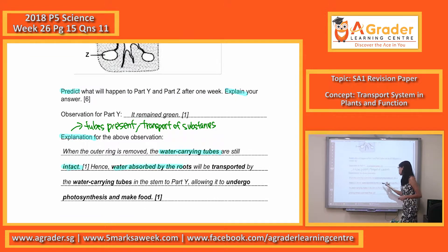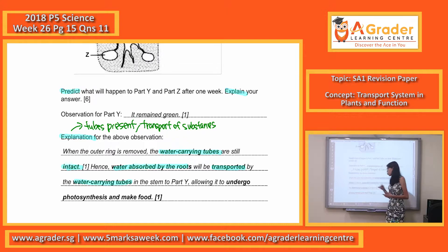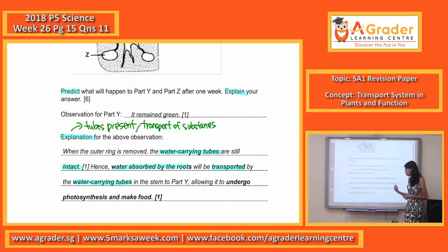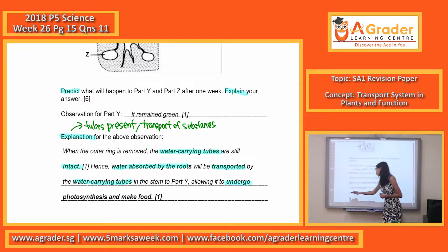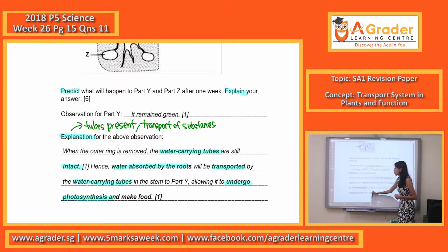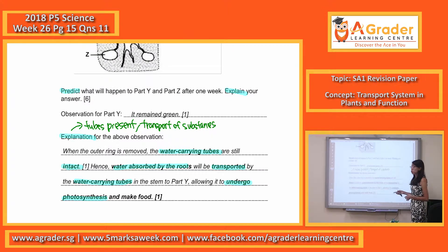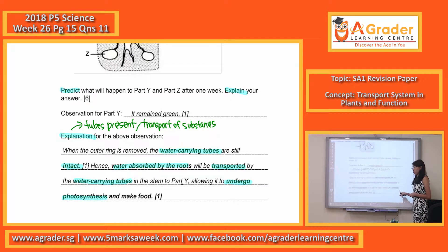Water absorbed by the roots is transported via the water-carrying tube up to the leaves or to the stem — to this particular part. The leaves use this water to undergo photosynthesis and make food. When the plant has food, it will not die, so it will still remain green.